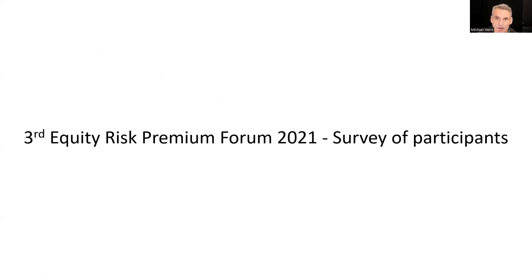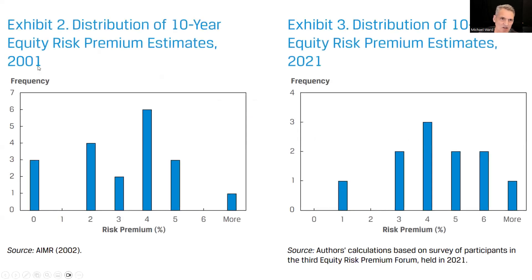Where do we get this equity risk premium from? One place is the equity risk premium forum. At the 2001 conference, participants picked a market risk premium anywhere between 0% and 7%, with a mode of 4%. Twenty years later in 2021, the conference ran again, and we still see a mode of about 4%, though some participants said 1% and some said more than 6%.